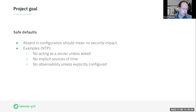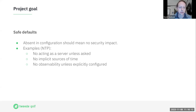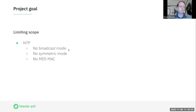From the NTP perspective, safe defaults mean: we do not act as a server unless explicitly configured, with explicit lines enabling server mode and specifying the listening port. We are explicit about observability configuration to prevent accidentally leaking private configuration details. And there is essentially no way to get implicit time sources accepted — each time source must be explicitly configured.